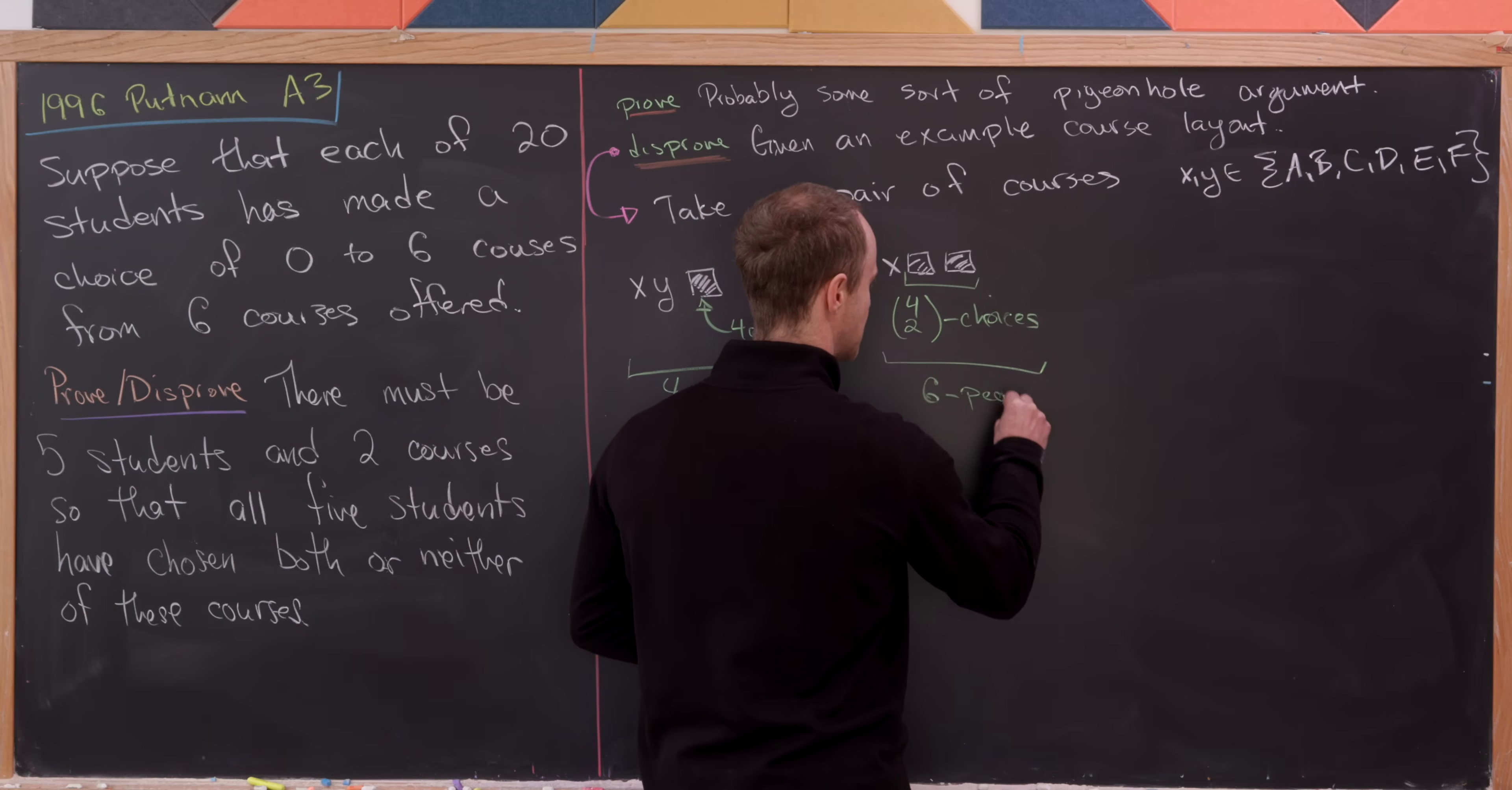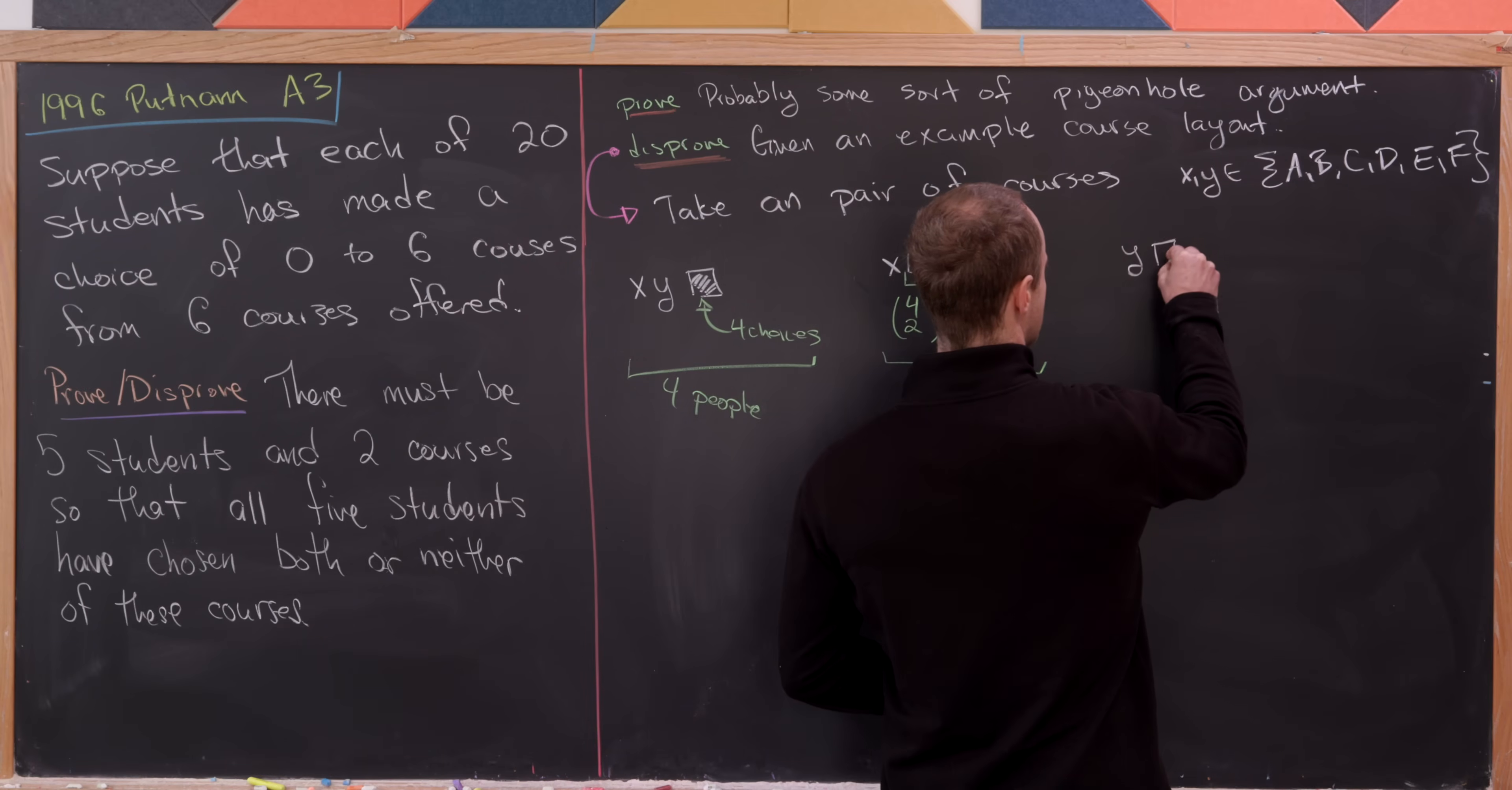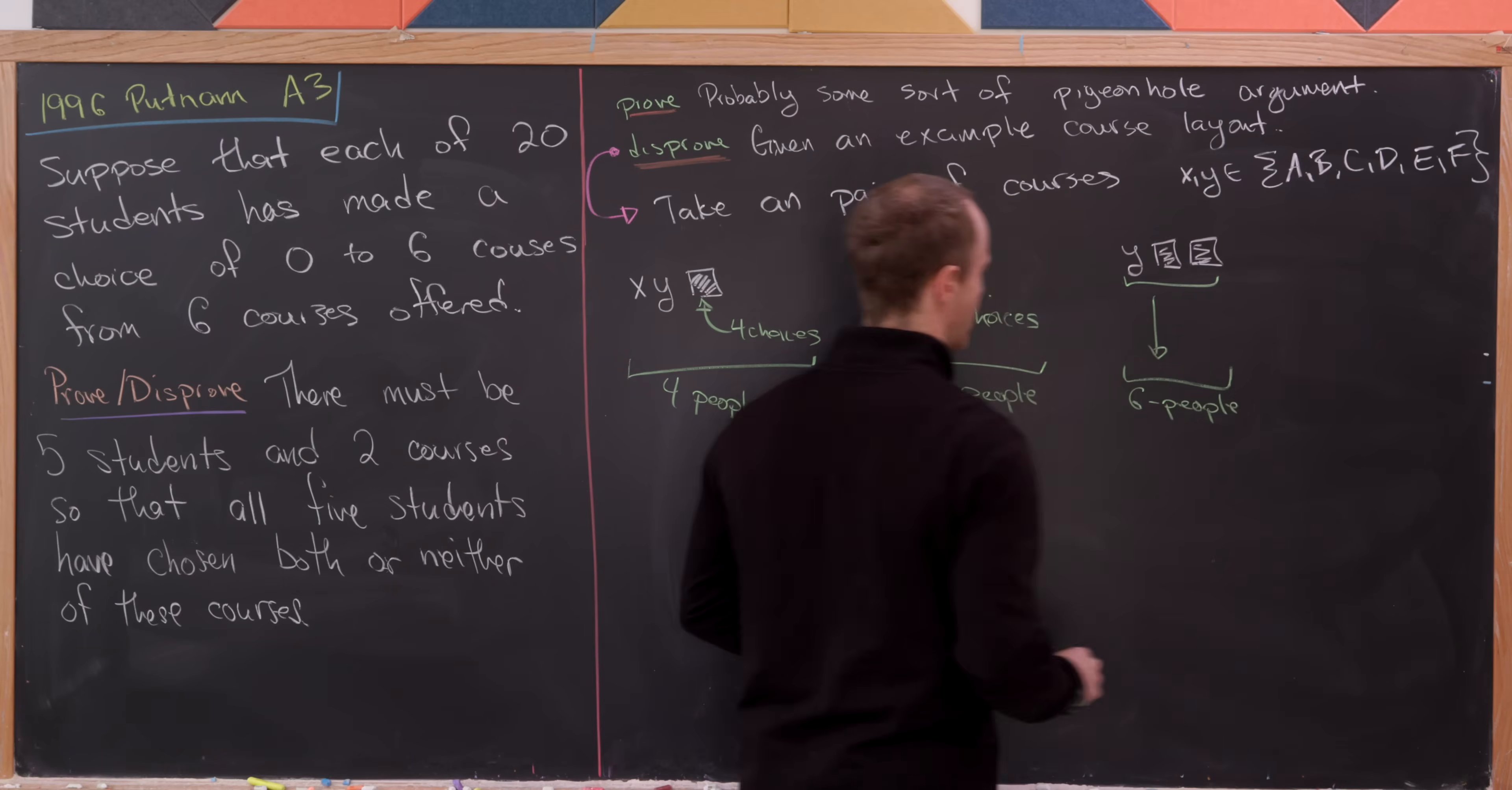So six people take X and two other courses, neither of them being course Y. And we've got this other type that's taking Y and two other courses, but not X. But pretty much for the same reason as this X blank blank, we have six people under this scenario.